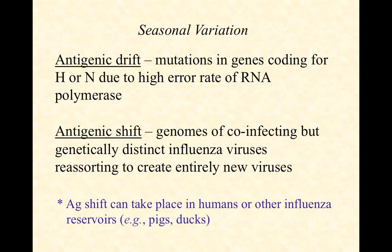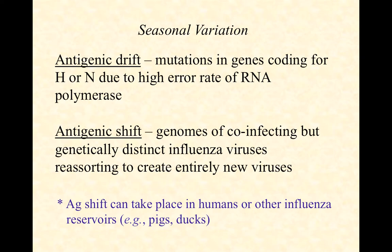In this final video in our three-part series on influenza, we're going to talk about epidemiology and what we can do as a society from a public health perspective to protect ourselves and to treat influenza if and when it happens. At the end of the last video we talked about RNA-dependent RNA polymerase and how RNA polymerases don't have a proofreading activity the way that DNA polymerases do. DNA viruses therefore do not drift around genetically nearly to the extent that RNA viruses do.